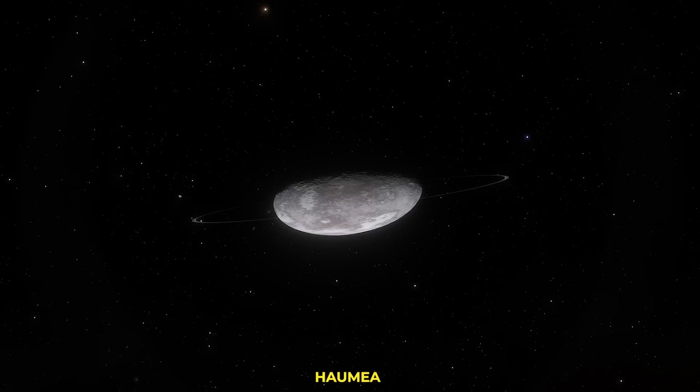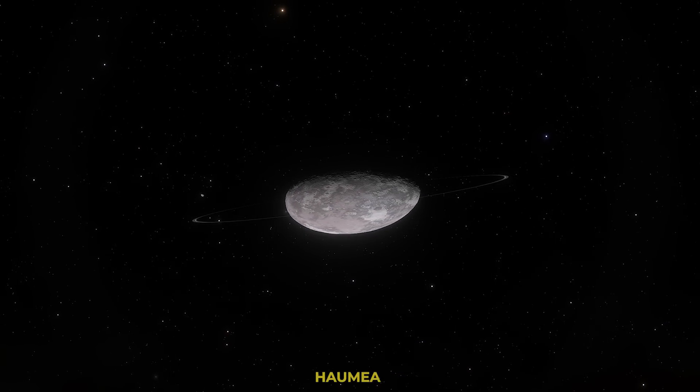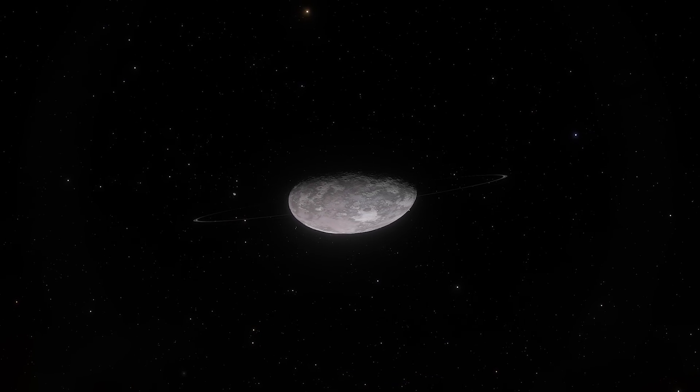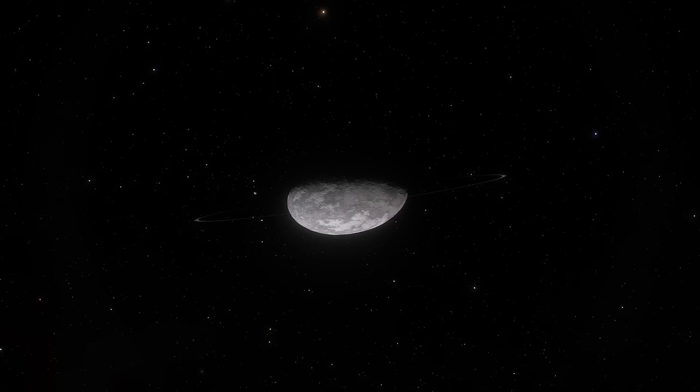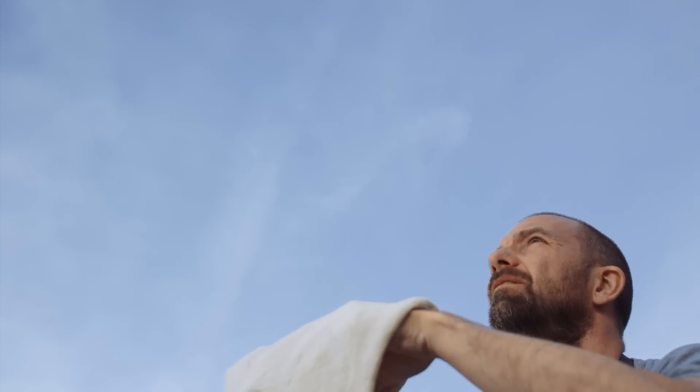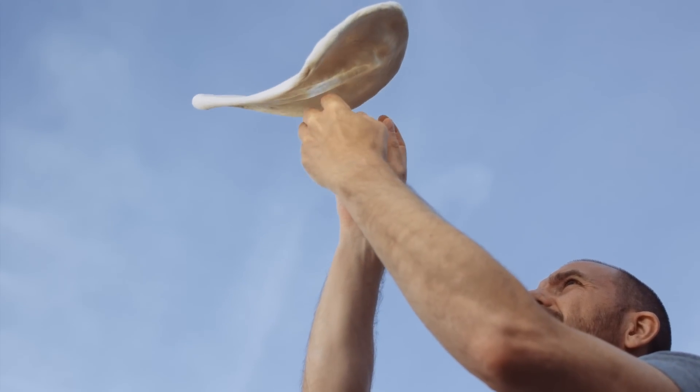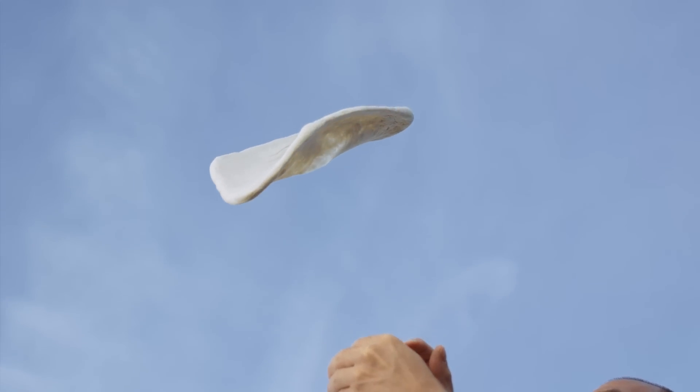Meet Haumea, a dwarf planet shaped like an egg. It's spinning so rapidly that it's elongated, defying the typical spherical shape. Imagine spinning a ball of pizza dough. The faster you spin, the more it stretches out.